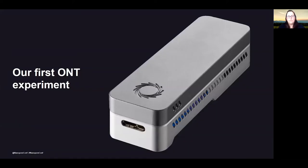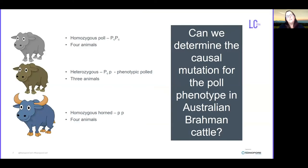So I wanted to talk to you today about our first Oxford Nanopore experiment. This experiment was run largely by a student in our lab called Harrison Lamb, and what we did was we examined the polled allele in Australian Brahman cattle. What Harrison did is he took genetic material from some homozygous polled animals, there were four animals that were homozygous polled,